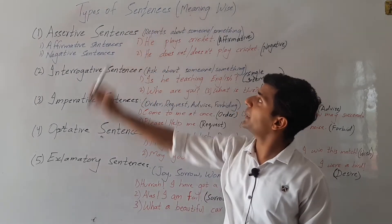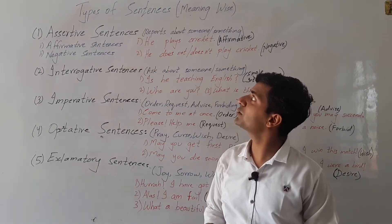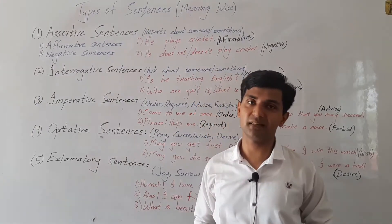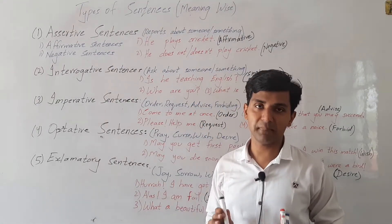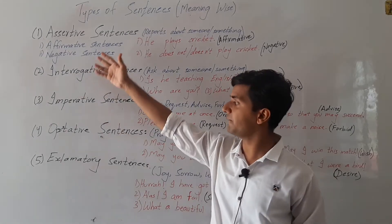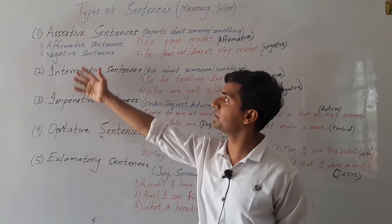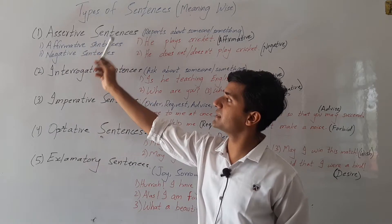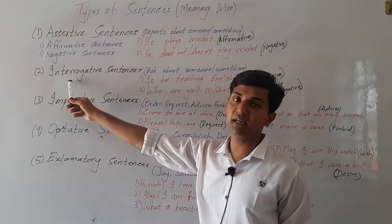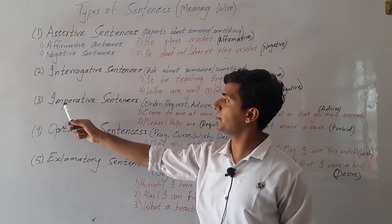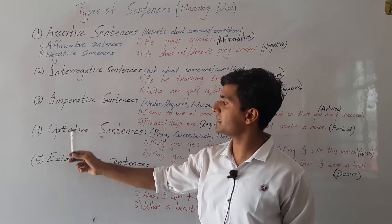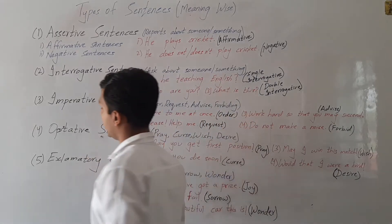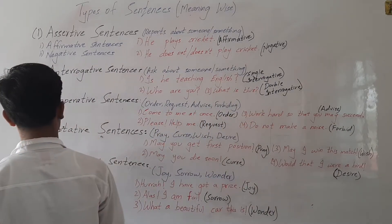So we have to know about types of sentences according to their meaning — that are meaning-wise. So here we have five types of sentences written on the book. They are: first, assertive sentences; then interrogative sentences; then imperative sentences; then optative sentences; and at the last, exclamatory sentences.